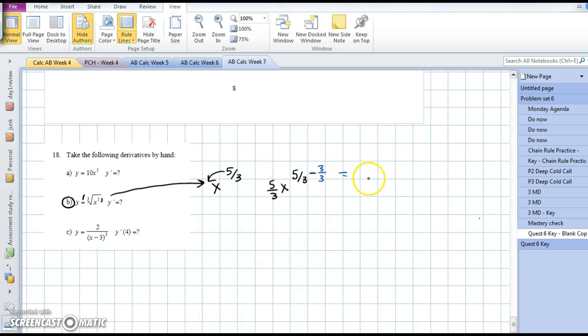So now I'm looking at 5 thirds x to the 2 thirds, and you should also be ready to see this as 5 thirds the cube root of x squared. I accept it either way.